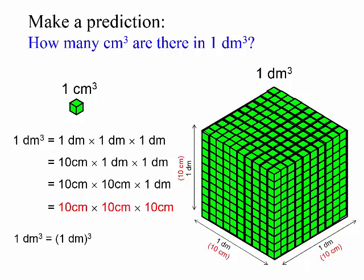1 decimeter cube is a thousand centimeter cubes. Another way of looking at it is to convert 1 decimeter to 10 centimeters.